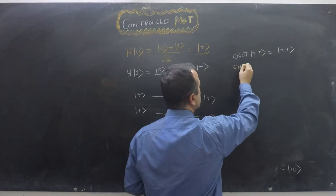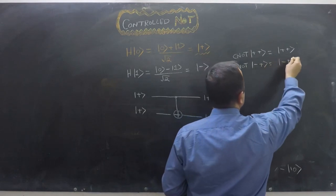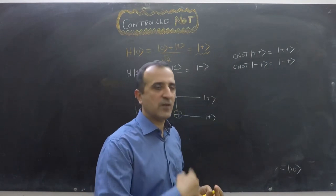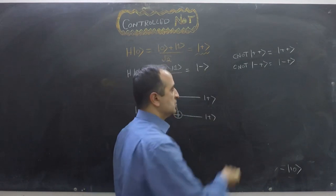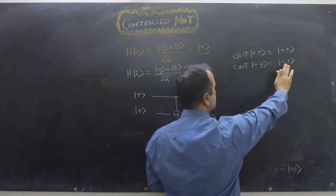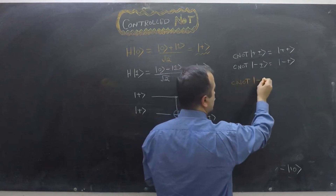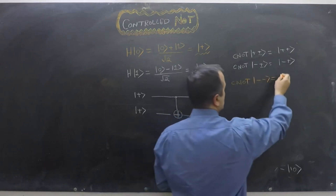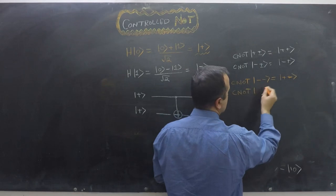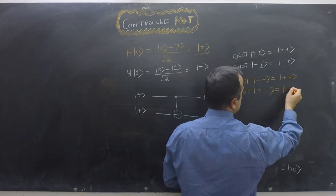Applying CNOT to |−⟩|+⟩ gives |−⟩|+⟩. The rule is: if the second qubit is |−⟩, the first qubit flips between |+⟩ and |−⟩. So CNOT on |−⟩|−⟩ gives |+⟩|−⟩ (first qubit flips), and CNOT on |+⟩|−⟩ gives |−⟩|−⟩ (first qubit flips to minus).